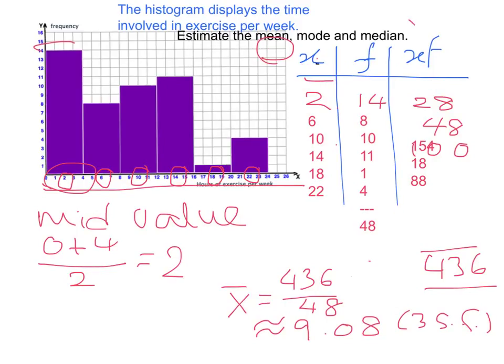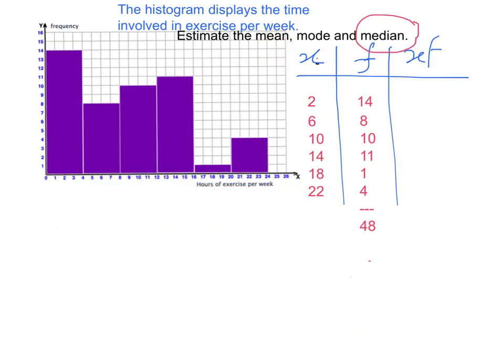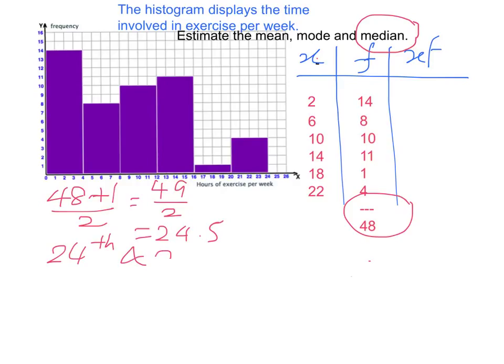Now we look at looking for the median. To look for the median is a little bit more work. We know that the total frequency here is 48. So the median occurs at 48 plus 1 divided by 2, or that is 49 divided by 2. That is 24.5. That is between the 24th and the 25th observation.